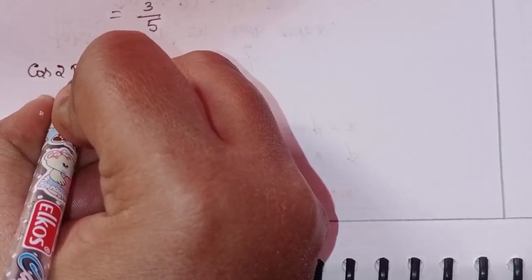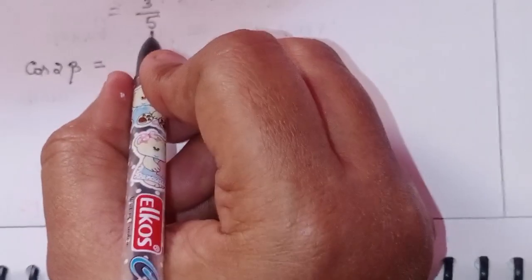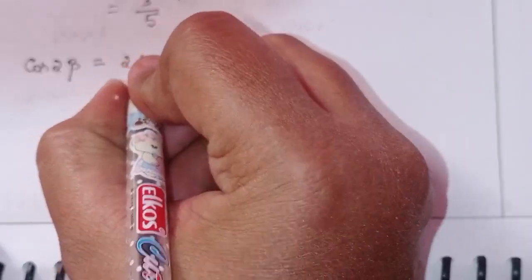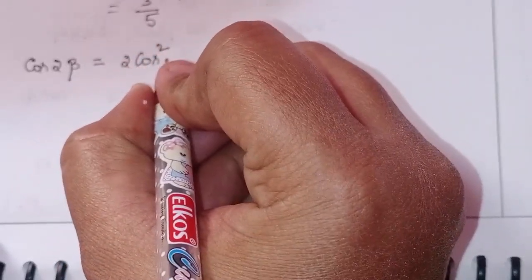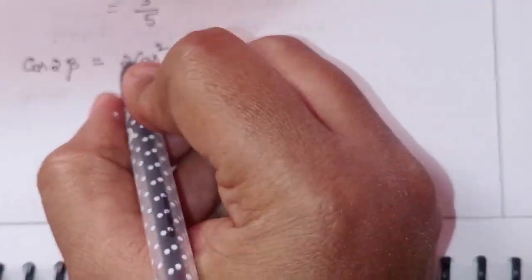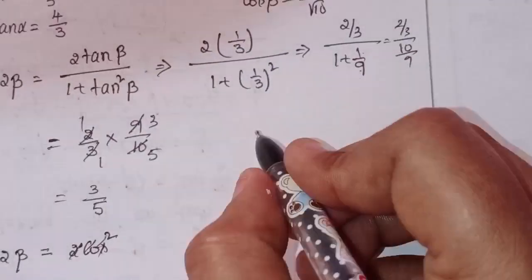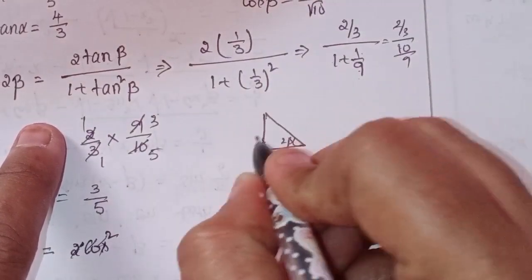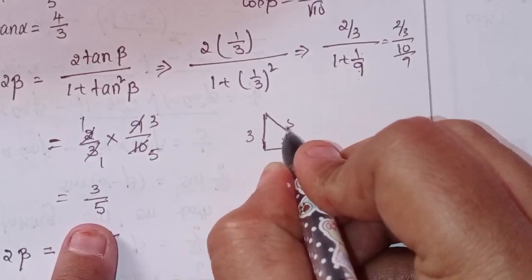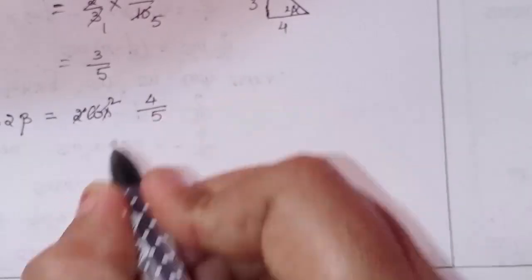Next, cos(2β) in terms of tan. cos(2β) = 4/5.